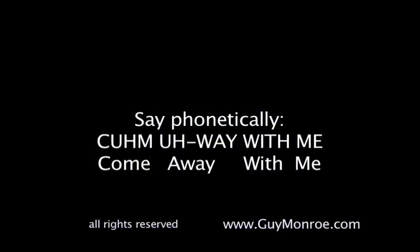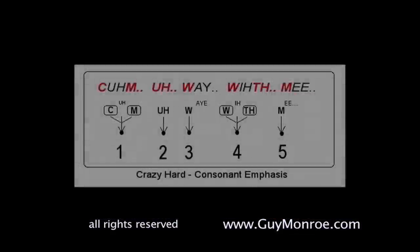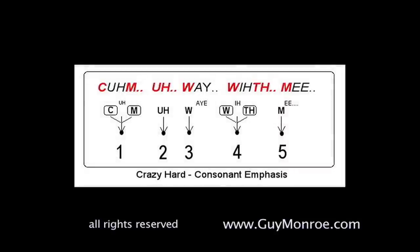You look at a phrase like 'come away with me.' What you were taught in school was formality, and that is consonant emphasis which stops airflow. So 'come away with me' would be staccato and very Morse code-ish with starts and stops. It would be: 'come away with me. Come away with me. Come away with me in the night.'